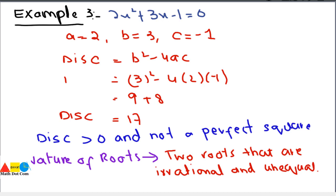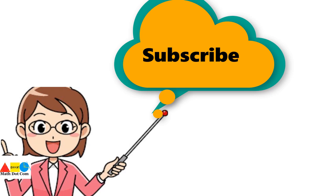This is how you can find the value of the discriminant and accordingly determine whether the roots obtained by using the quadratic formula are real, imaginary, or irrational and unequal. That's all about how you can find the discriminant and the corresponding nature of the roots. Thank you for watching; if you liked this video, please subscribe to our channel math.com for more updates.